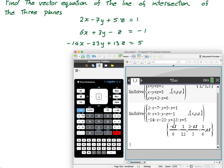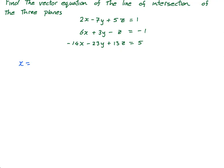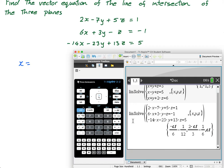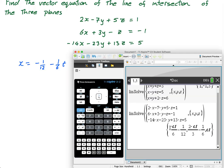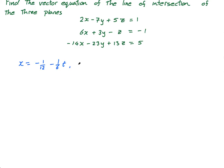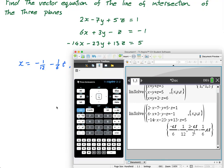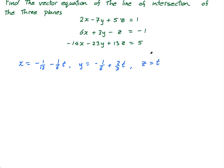So what is this? Remember, this is their way of bringing in the parameters. Their parameter is C one, but that's what we're going to call T. So what we have is X equals negative a twelfth minus a sixth T. Then the Y value is minus a sixth plus two thirds T. And finally, Z is just going to equal T then.